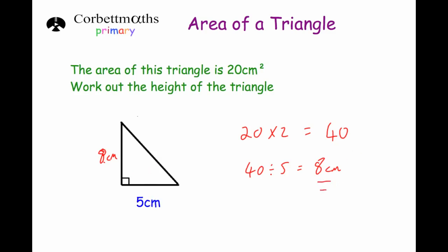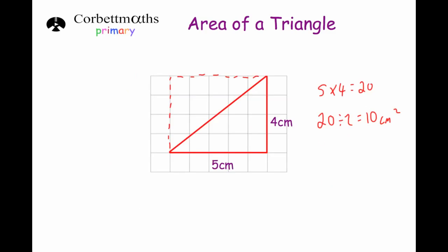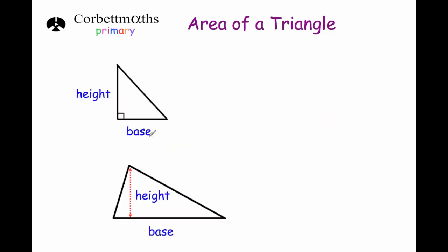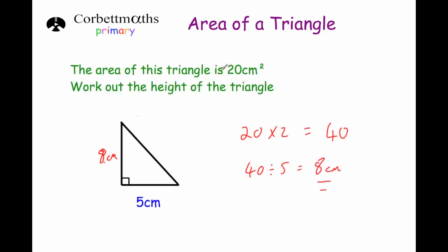So if you want to find the area of a triangle you can do base times height divided by two. And if you know the area and you're trying to find either the base or the height, you work backwards: multiply by two, then divide by the dimension you already know.